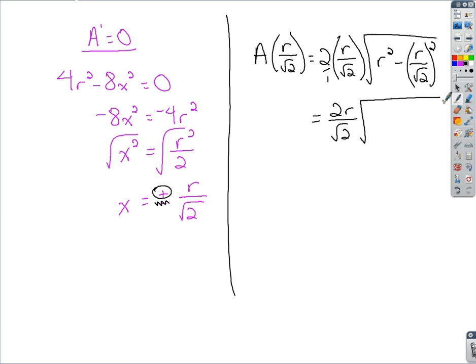Inside here, well let's see. You've got r squared minus, if you square the r over root 2, you have r squared over, the root would cancel, so it would just be 2. You get a common denominator of 2. So that takes us to 2r over root 2 times the square root of, it's 2r squared minus r squared, which is r squared, over 2.